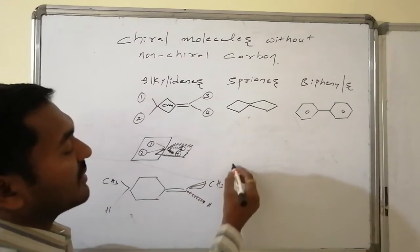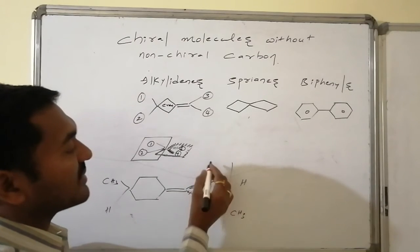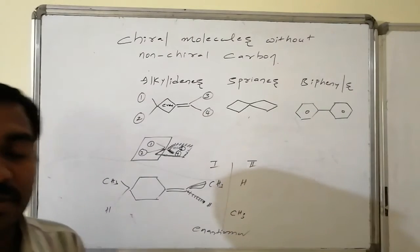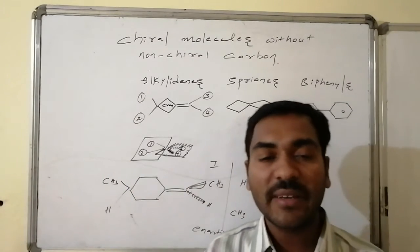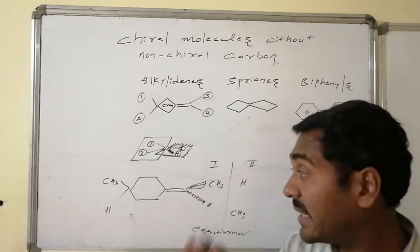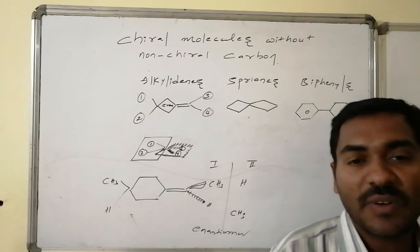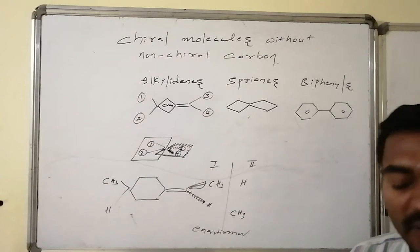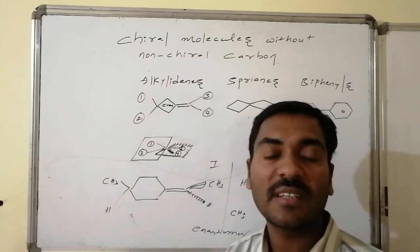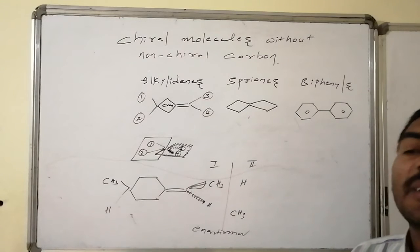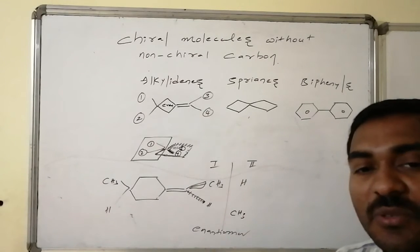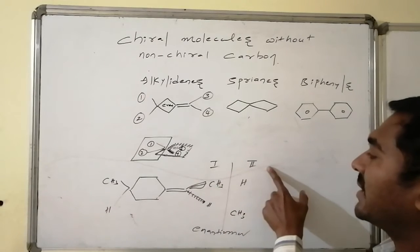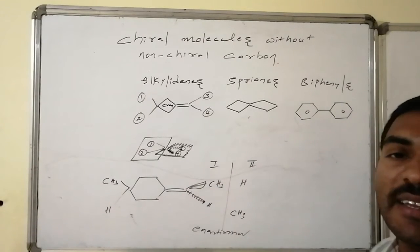If we interchange the substituents — suppose this end has hydrogen and methyl, and we switch them — the first and second compounds become enantiomers to one another. Their specific rotational values are equal in magnitude but opposite in sign. If we interchange the set on both ends simultaneously, the result is the same compound — known as a homomer. Whatever rules are applied for allenes regarding substitutions, those same rules apply for alkylidenes as well.